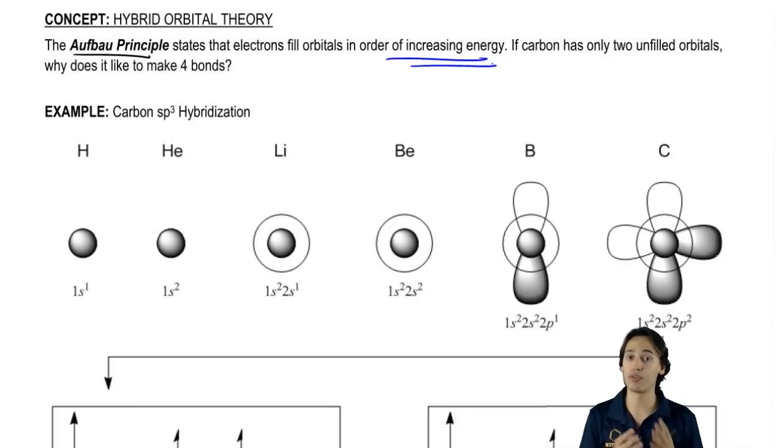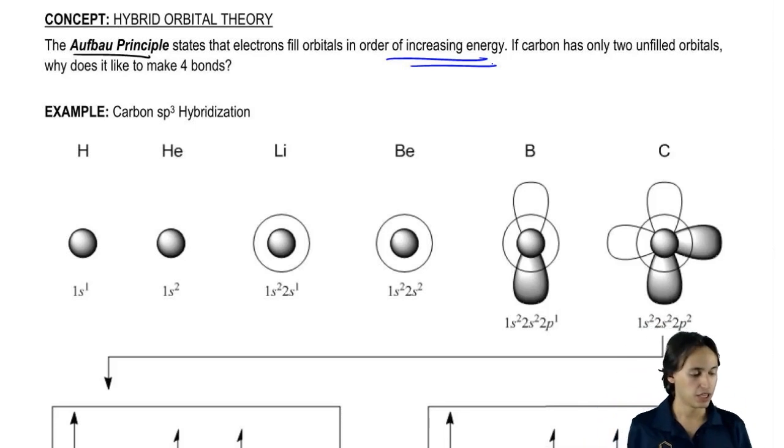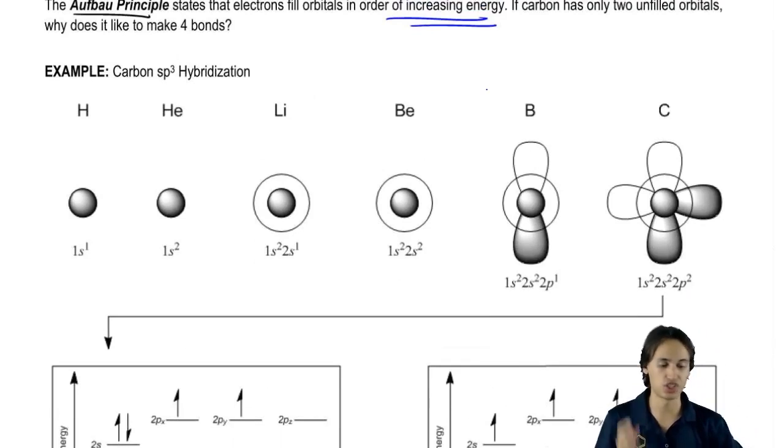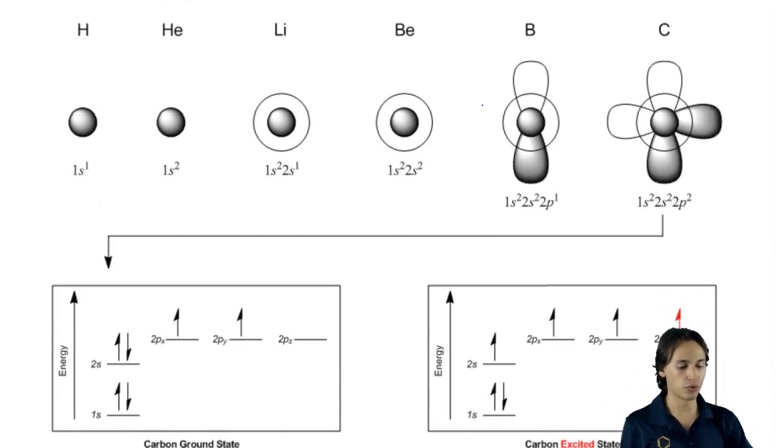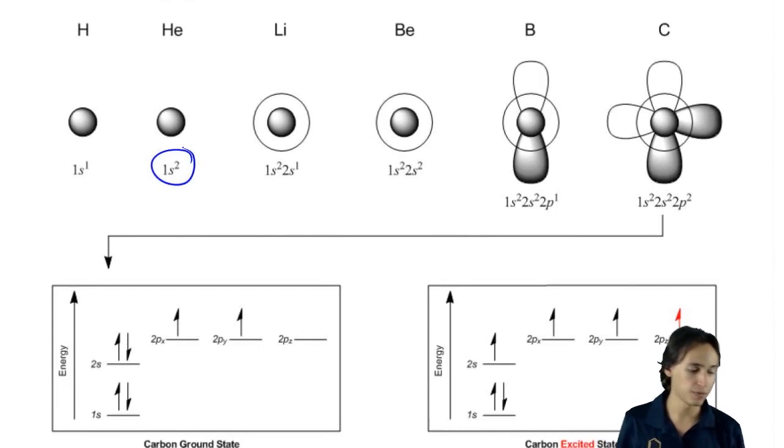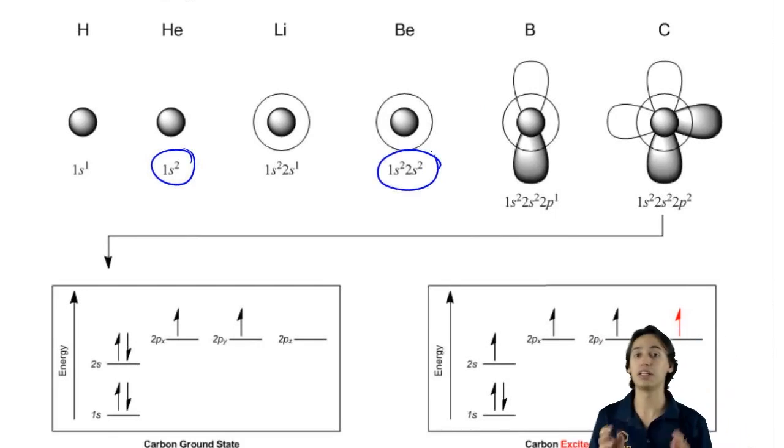Remember that my orbitals in order of increasing energy were 1s, 2s and then the three 2ps. If we go ahead and draw the diagram for carbon, let's say, let's just use carbon as an example, what we're going to find is that the 1s gets completely full at the helium stage. Then the 2s gets completely full at the beryllium stage.